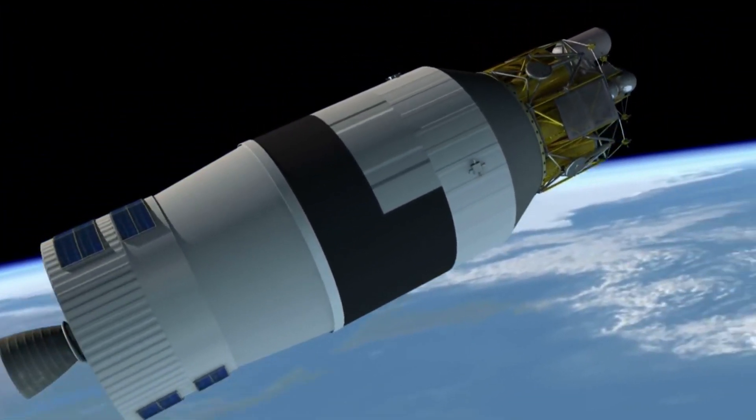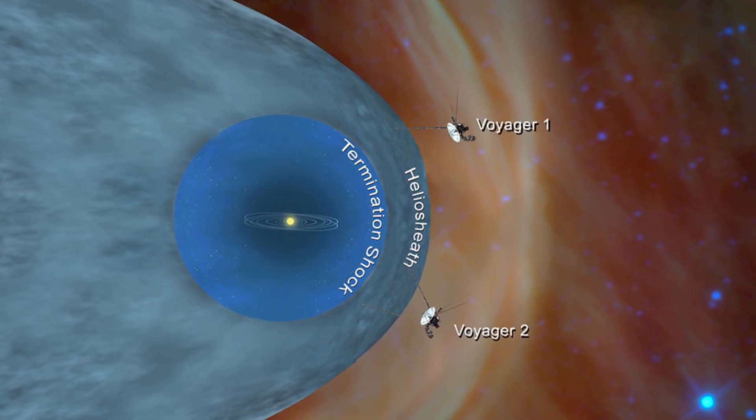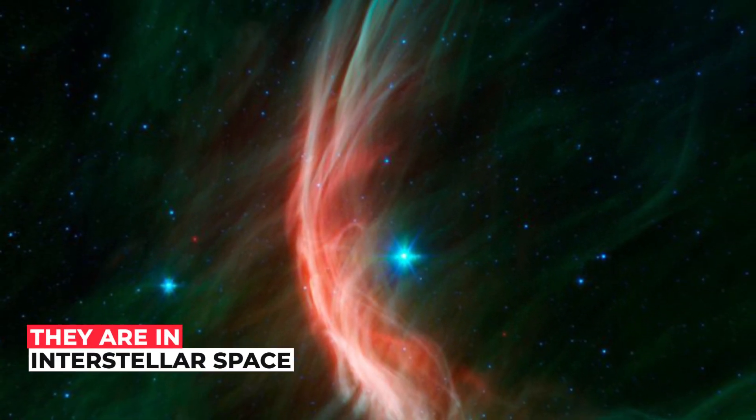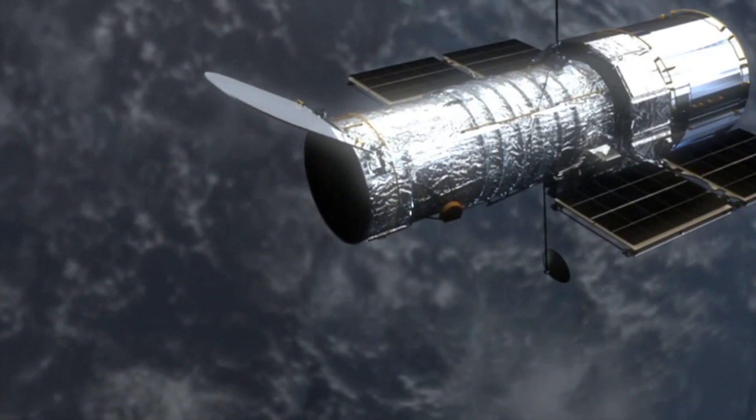The spacecraft have continued to move away from us since then. The Voyager 1 and 2 spacecraft are now so far apart, they are in interstellar space, the region between the stars. No other spacecraft has ever traveled this far.